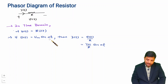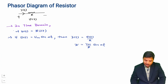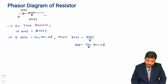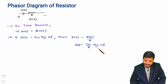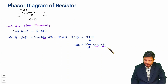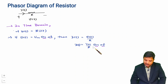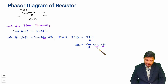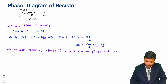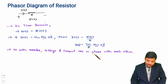Now let us understand in time domain how much phase difference exists between V(t) and I(t). If you observe, V(t) is a sine signal and I(t) is also a sine signal. The frequency of both is the same and there is no phase difference between current and voltage. So when you have a resistor, as per the V(t) and I(t) equations in time domain, both are in phase — there is no phase difference between voltage and current.